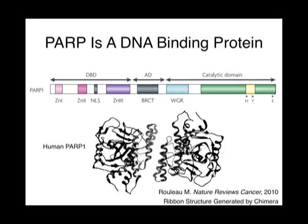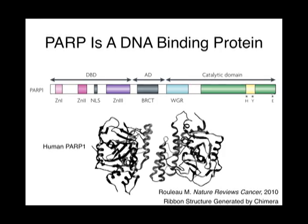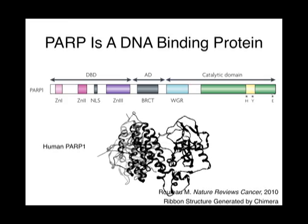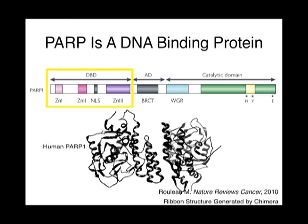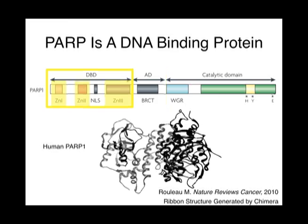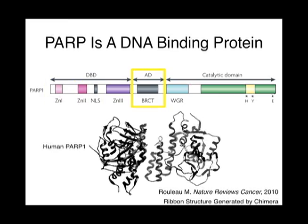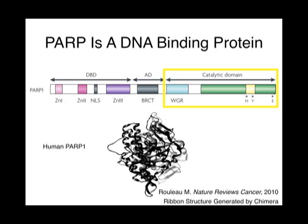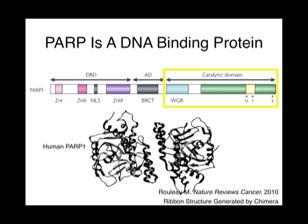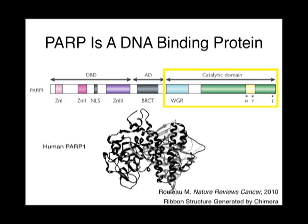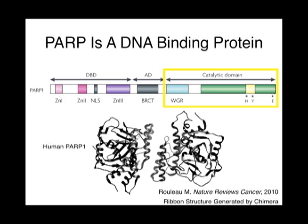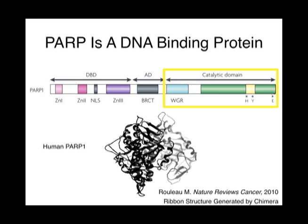To understand how PARP inhibitors work, we must first consider how PARP functions. PARP is a nuclear globular protein that contains three functional domains: an N-terminus DNA binding domain containing several zinc finger motifs, a central auto-modification domain, and a C-terminus catalytic domain that houses the protein's enzymatic activity and substrate binding sites for nicotinamide adenine dinucleotide, NAD+, which powers the protein.